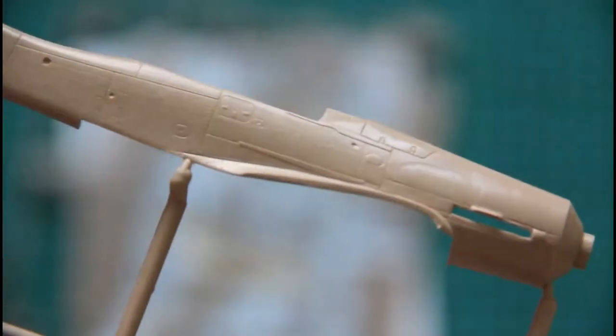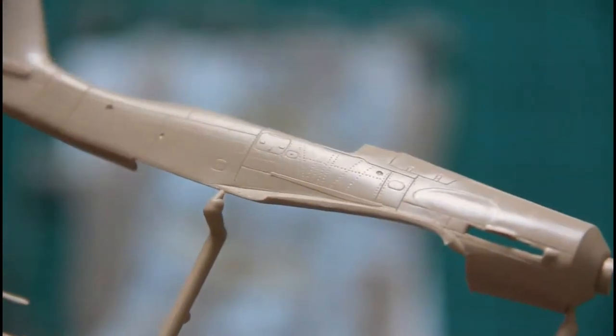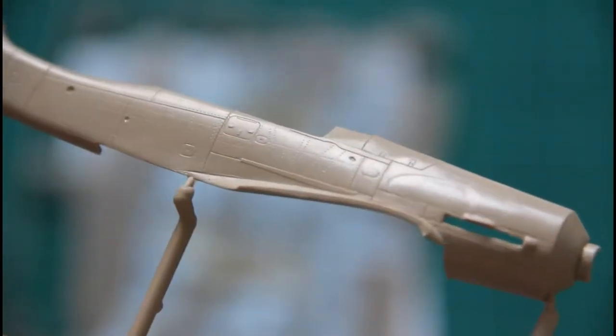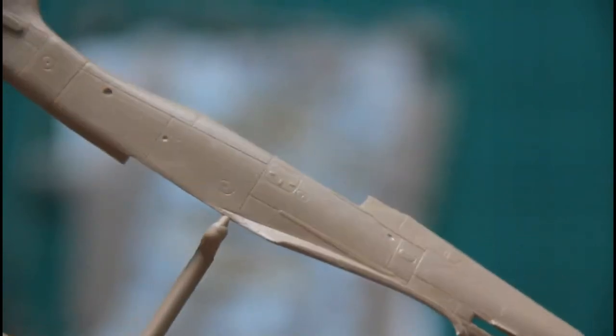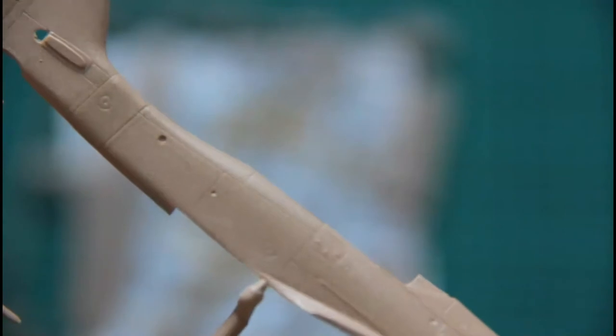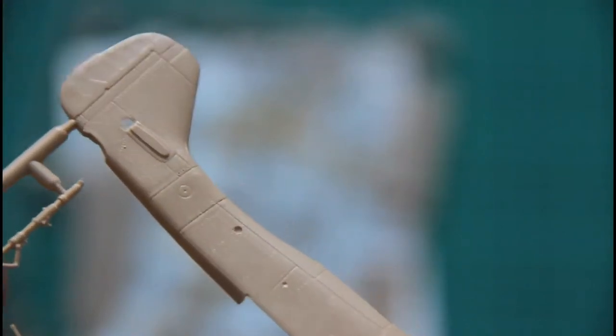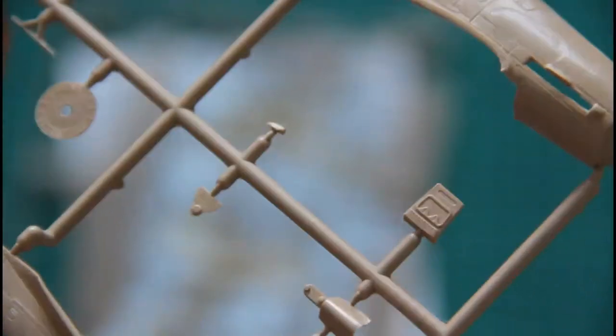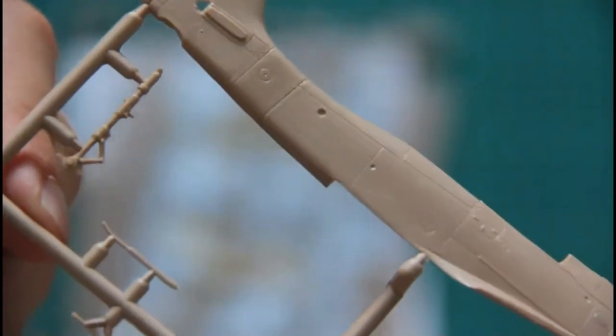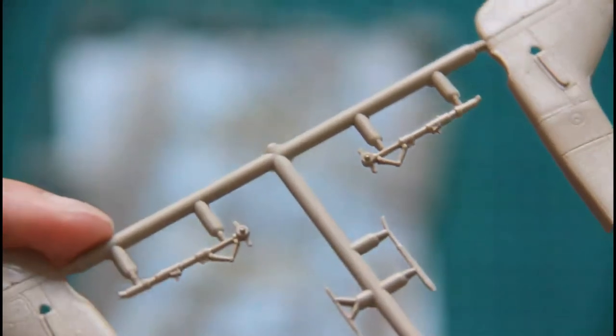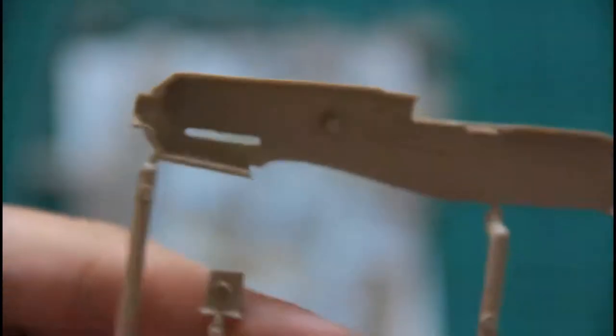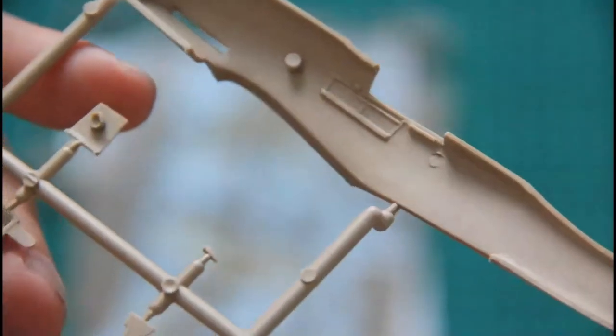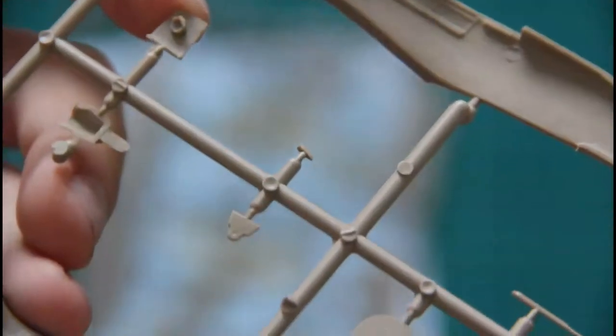We have this fuselage sprue which was actually improved in comparison with RV models. It has the right dimensions, because RV model's fuselage was a bit shorter, I think two millimeters shorter than it should be. Also riveting is redone, and some parts were remade for this version. Here are the landing gear struts as well. On the inside there is almost no detailization because the cockpit would be assembled separately.